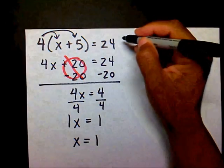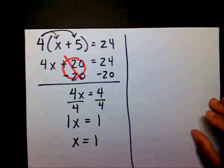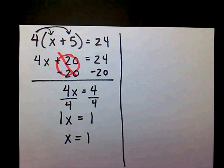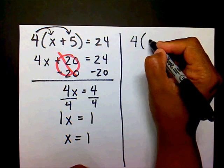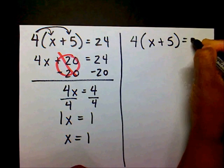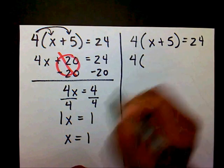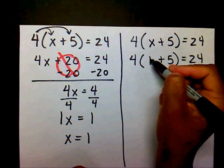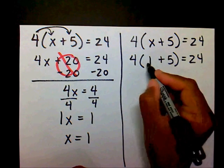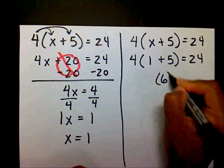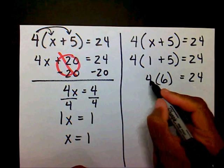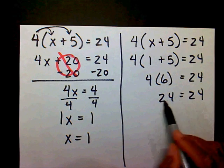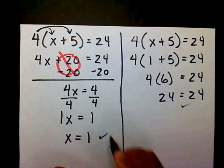Right now, we think that x equals 1, but we don't know if that's true because we have not checked it yet. So you always check your equation because that's one way that you know that your solution is correct. I'm going to write my original equation down: 4 times x plus 5 equals 24. I'm going to substitute 1 in for my x. I want to take care of this first. 1 plus 5 is 6, and 4 times 6 is 24. Since I ended up with 24 on both sides, I know that's correct and I also know that x equals 1 is correct.